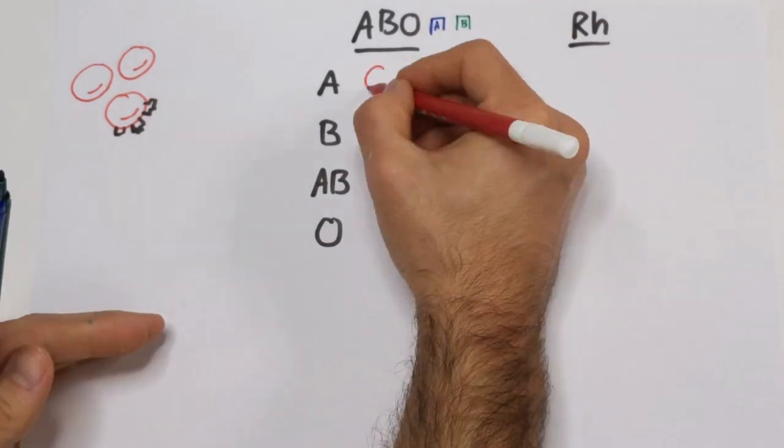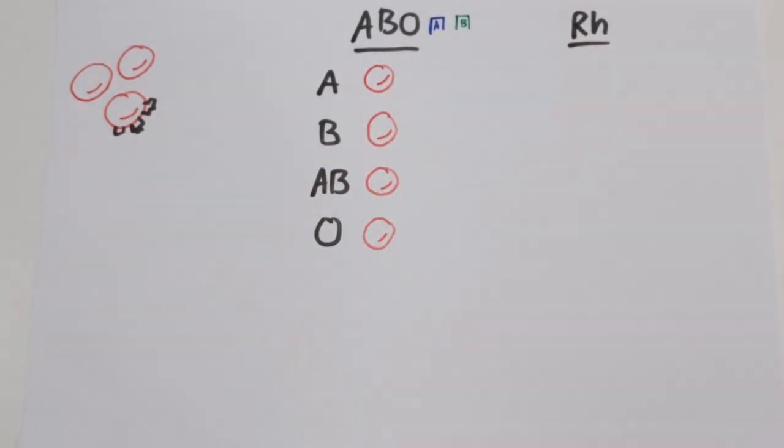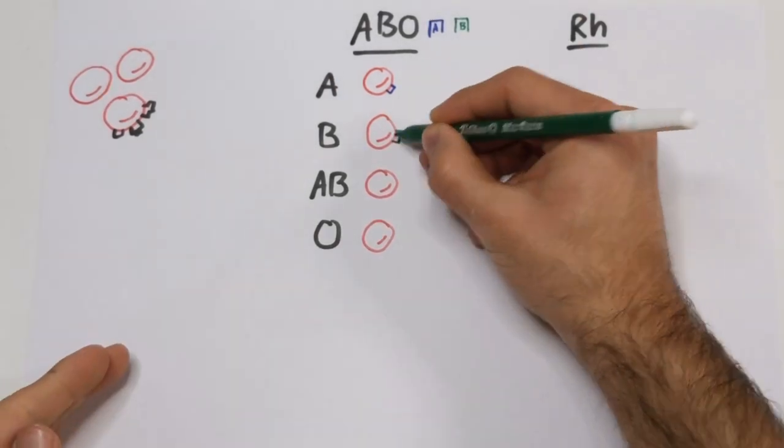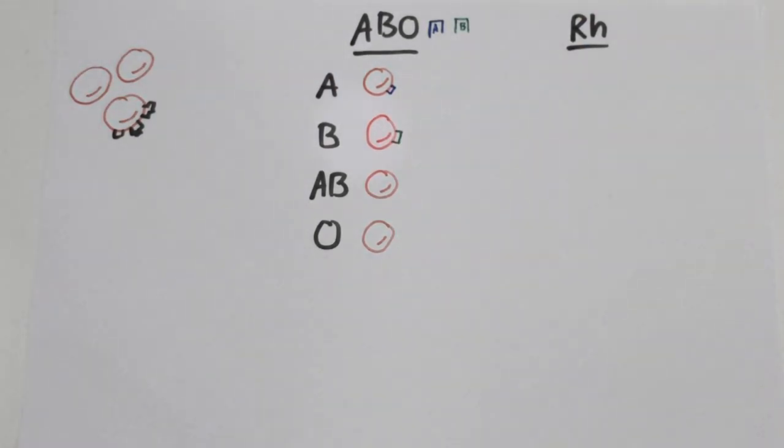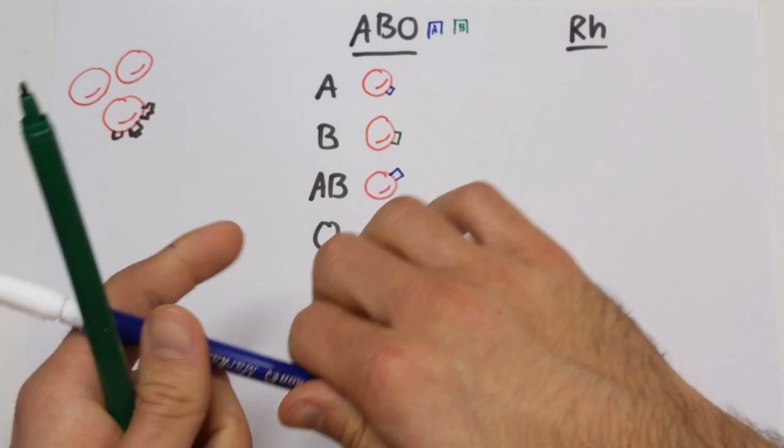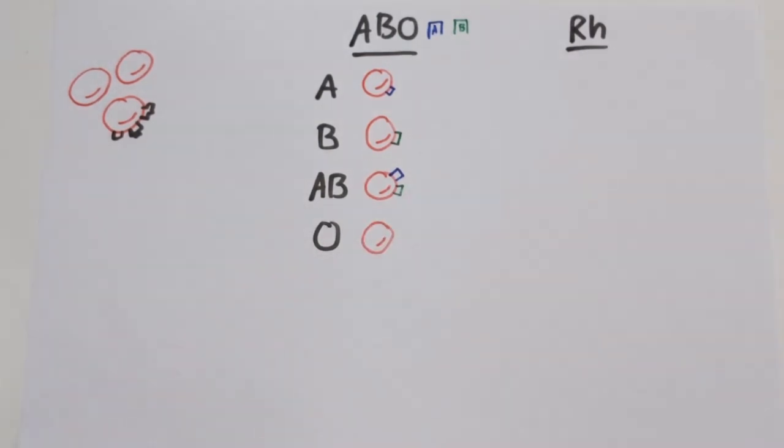When a person's red blood cells contain only the A antigen in their surface without the B antigen, they are said to be type A blood. When a person's red blood cells only contain the B antigen and do not have the A antigen, they are said to be blood type B. When red blood cells contain both antigens in their surface A and B, the person is type AB, and when neither A nor B antigen are present, the person's blood type is O.